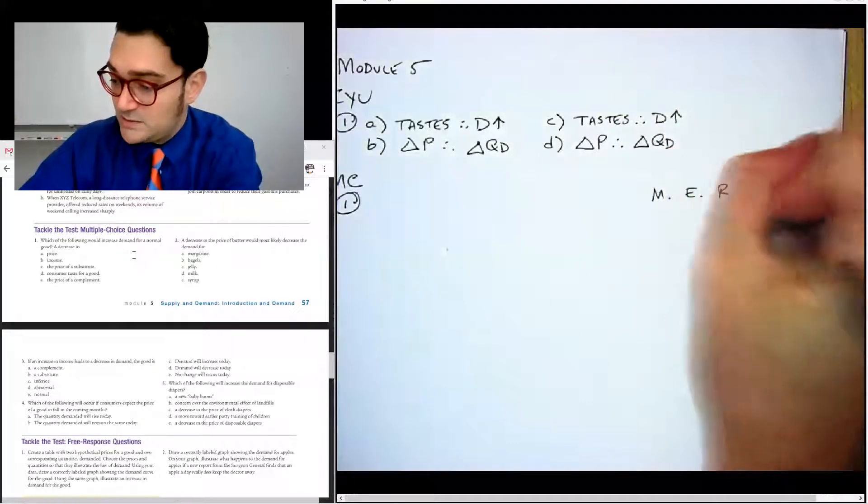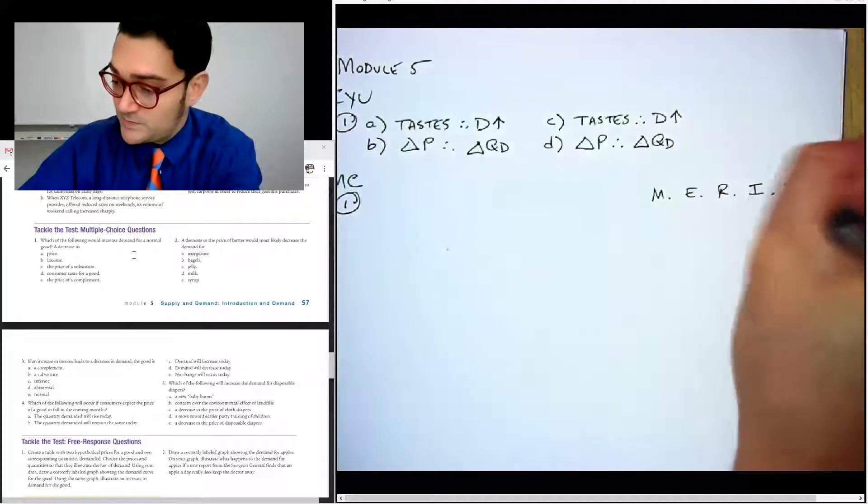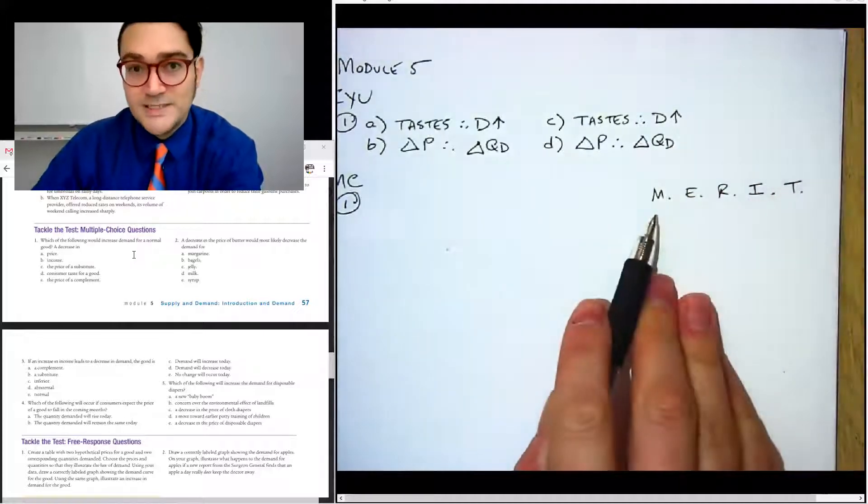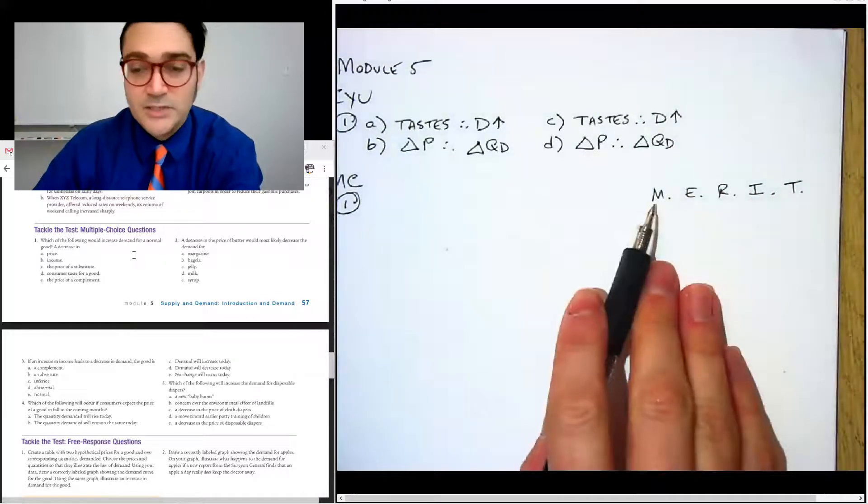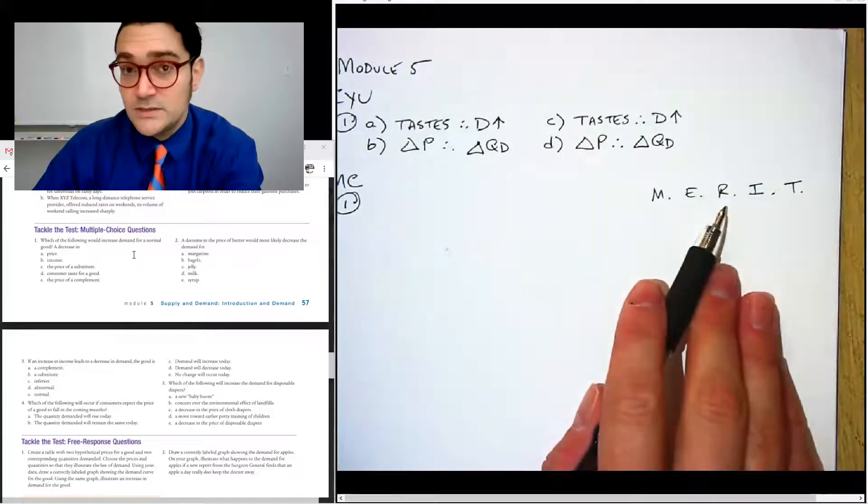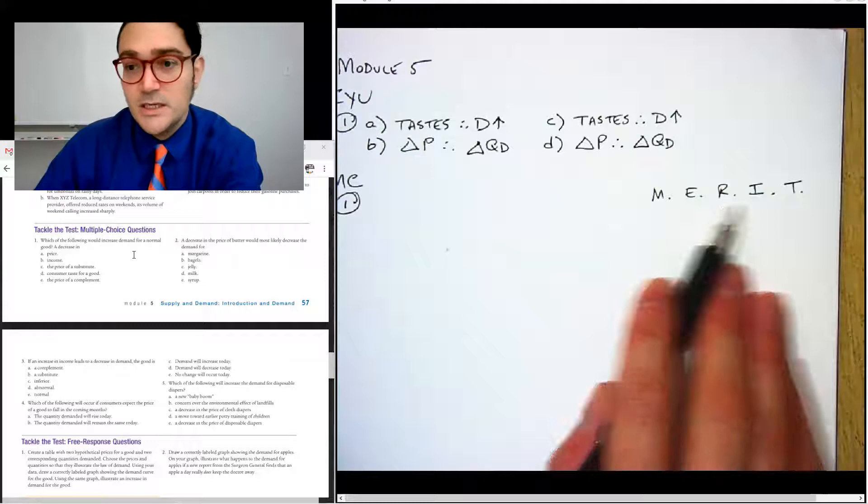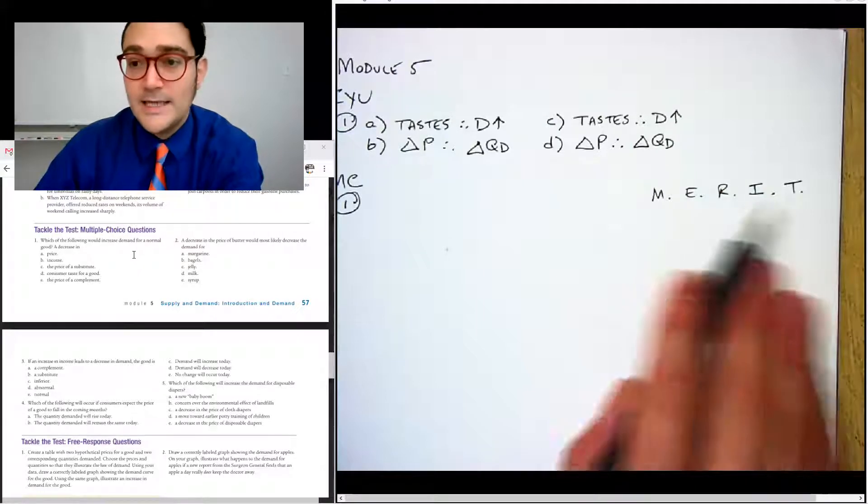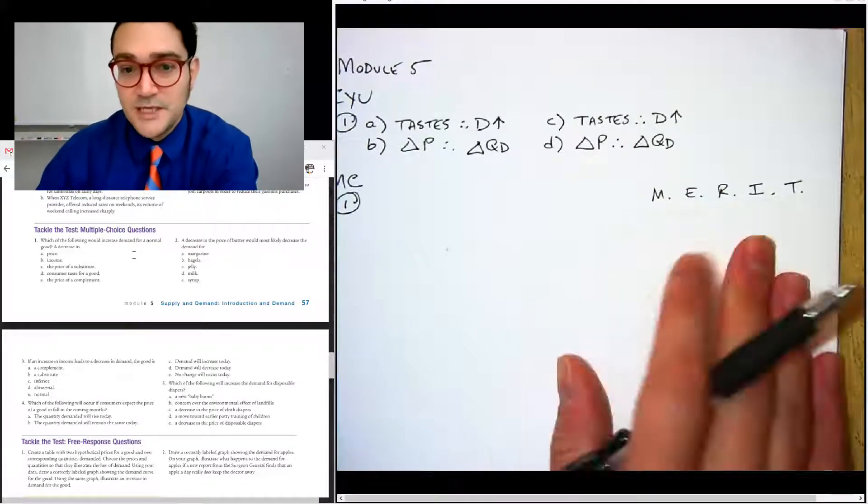MERIT shifts demand, right? And just very quickly, market size, that's the number of buyers, expectations about future prices, related goods like substitutes and complements, income, and tastes and preferences. So those are the demand shifters.